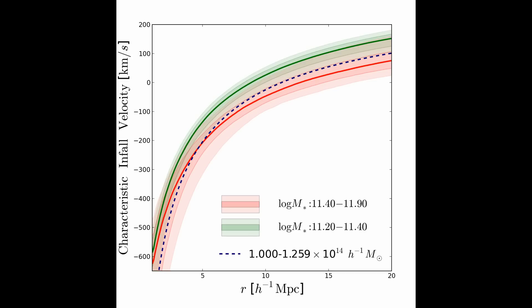The dashed curve shows the expected infall velocity profile for 10^14 solar mass clusters in the simulation. We can see that the highest data mass bin corresponds to roughly clusters of this mass scale.